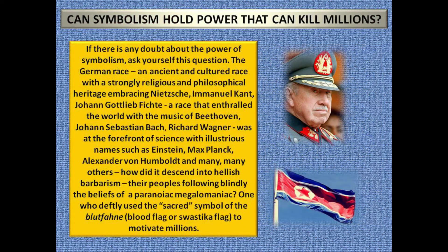Can symbolism hold power that can kill millions? If there is any doubt about the power of symbolism, ask yourself this question: the German race — an ancient and cultured race with a strongly religious and philosophical heritage embracing Nietzsche, Immanuel Kant, and Johann Gottlieb Fichte; a race that enthralled the world with the music of Beethoven, Johann Sebastian Bach, and Richard Wagner; at the forefront of science with illustrious names such as Einstein, Max Planck, and Alexander von Humboldt — how did it descend into hellish barbarism, with its peoples following blindly the beliefs of a paranoiac megalomaniac? One who deftly used the sacred symbol of the Blutfahne — blood flag — or swastika flag, to motivate millions.